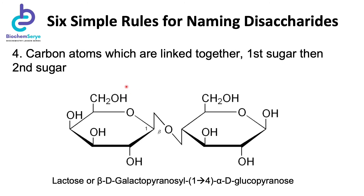Rule number four involves determining the sequential number of the carbon atoms within the monosaccharide structure that are involved in the glycosidic linkage. In this example, it is carbon-1 of galactose in the first monosaccharide, and in the second monosaccharide of glucose, it is carbon-4, the non-anomeric carbon. To indicate this glycosidic linkage, you have two numbers — 1 and 4 — with an arrow in between, enclosed by a set of parentheses.